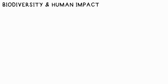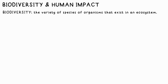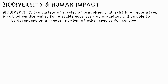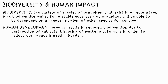Biodiversity basically means how many different types of organisms you have in an ecosystem. High biodiversity generally makes for a stable ecosystem, as organisms don't have to depend on one species for a resource, for example. Human development usually results in lower biodiversity. Such development also poses problems when it comes to waste — we're having to find more ways of disposing of sewage, fertilisers, toxic chemicals, atmospheric pollution, and more to reduce our impact on the environment.